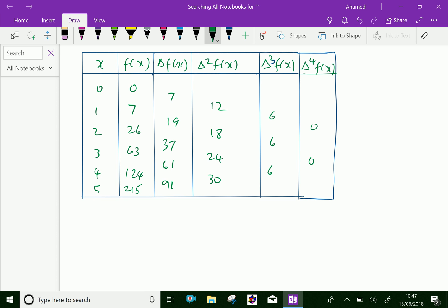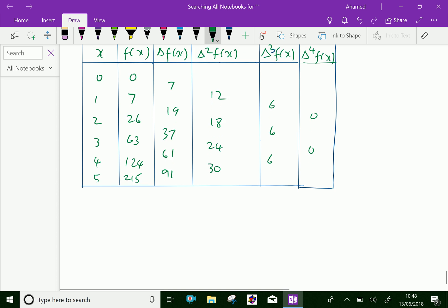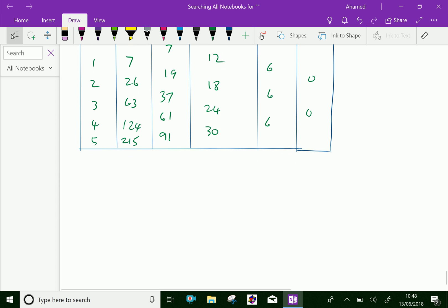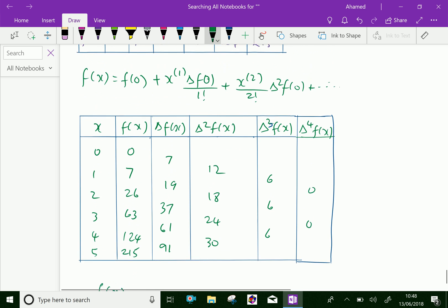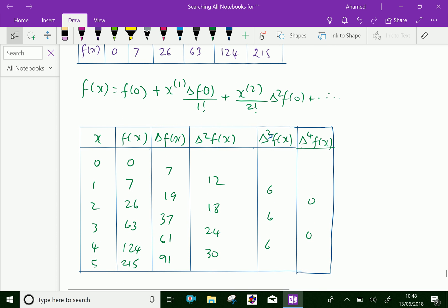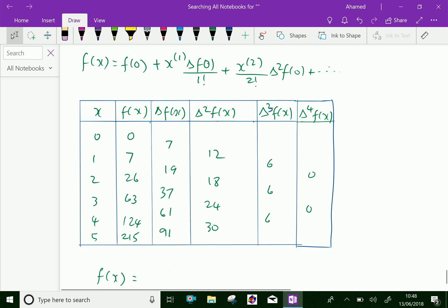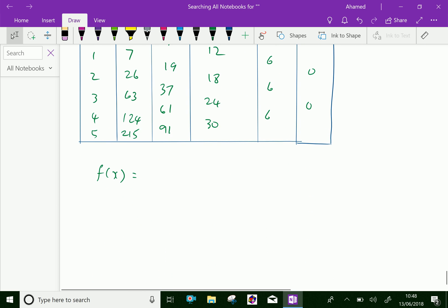Now putting the values of delta f of 0, delta square f of 0, delta cube f of 0, we can have the function like f of x equal f of 0 means put 0 value in f of x.